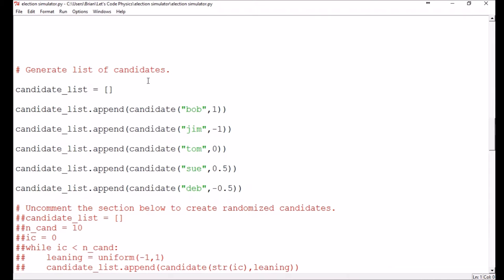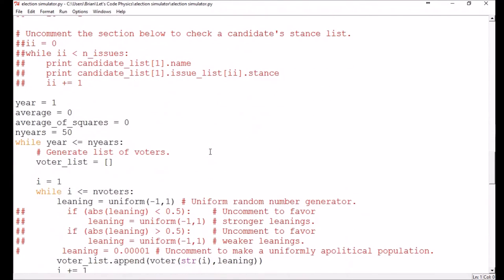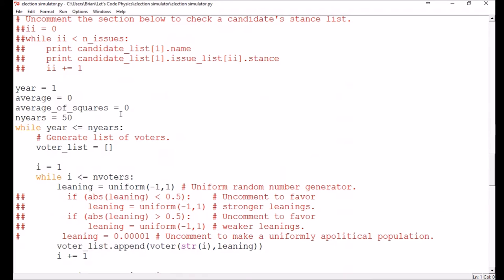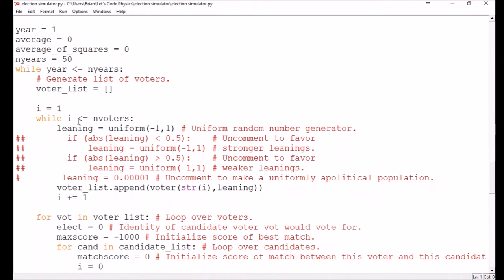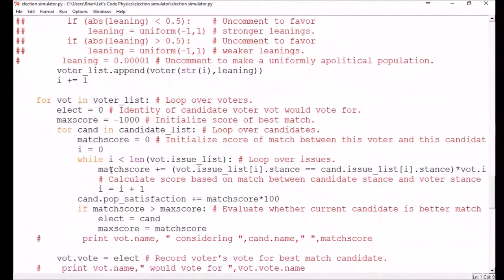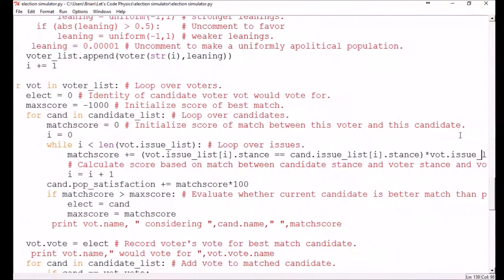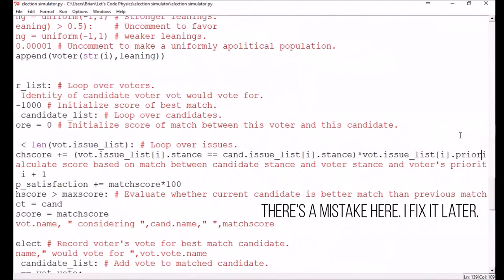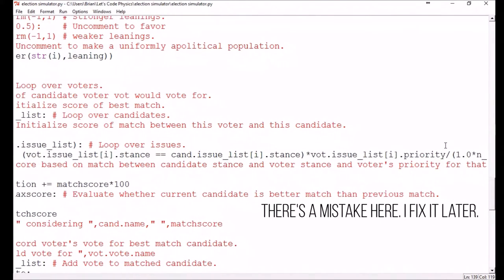So that takes care of all the definitions we need to establish. The first actual step in the code is to generate the set of candidates and then the set of voters. Note that each candidate has a fixed political leaning while the voters' political leanings are randomized each year. The code loops over a number of election years to calculate an average of the results since we're dealing with random variables. The next block is where the code generates the voters whose leanings are randomly generated every election cycle. The next block is essentially the most important part of the code where the voters evaluate each of the candidates. The match score calculation takes place in this line here where if the voter's stance on an issue is equal to the candidate's stance on an issue, then that amount gets added to the voter's match score based on the priority that they've assigned to that issue.